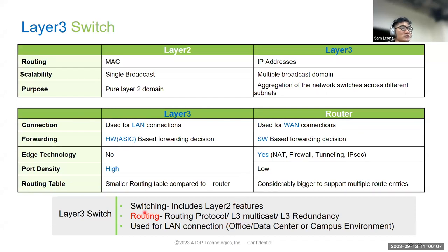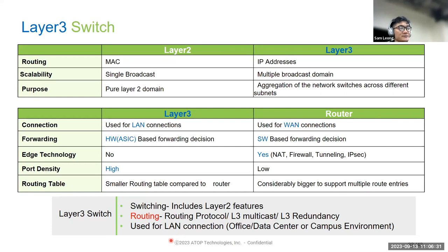In summary: a Layer 3 switch contains all Layer 2 functions but also supports routing, including static routing and dynamic routing working at the IP layer. It supports multi-task and Layer 3 redundancy protocols and is used for local area network connections.